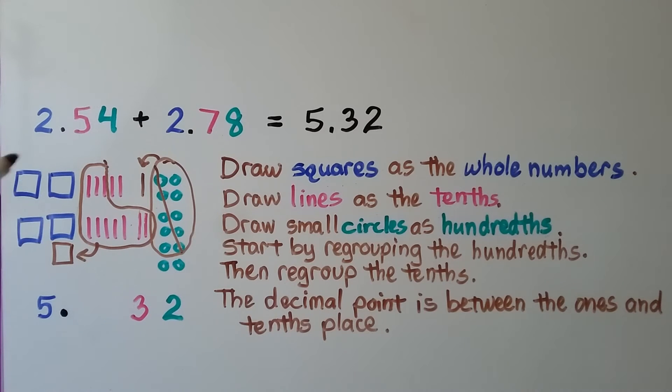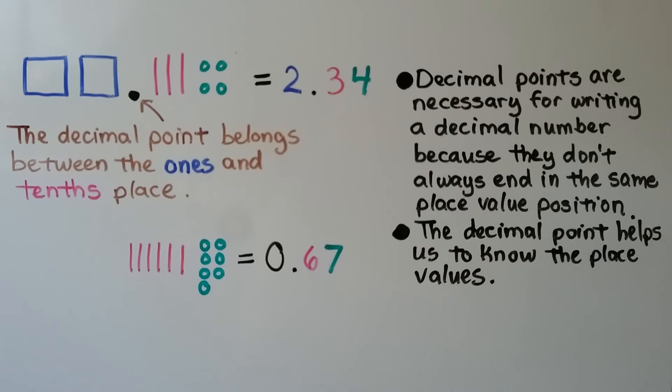We can see we have 5 whole and we have 1, 2, 3 tenths and 2 hundredths. We put the decimal point between the 1s and the tenths place, between the 5 ones and the 3 tenths. And the decimal point belongs between the 1s and the tenths place.